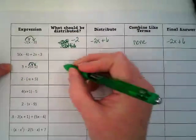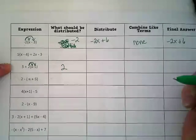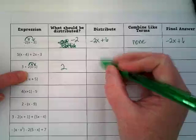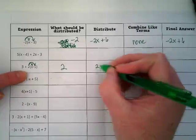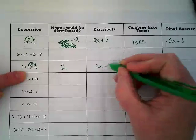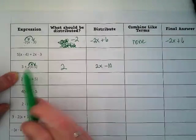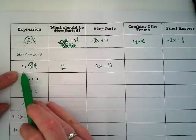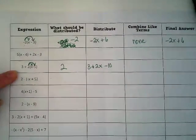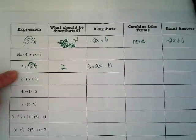So, what's being distributed here is a 2. What do we have to distribute? 2 times x is 2x. And 2 times negative 5 is negative 10. I have this 3 here though. Right? So, it should come and be put at the very beginning of it because that's just a part of the expression we're not using yet.